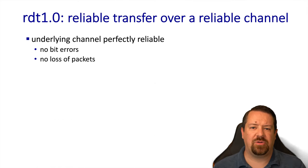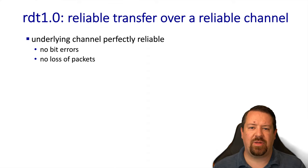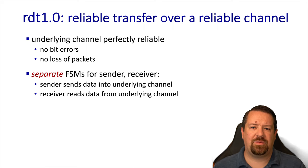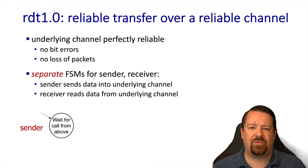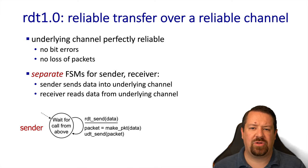We'll look at the simplest case first. RDT 1.0 assumes that the underlying channel is reliable, so it cannot have packet errors, cannot lose packets, and it will not reorder packets. This makes the job of the RDT 1.0 protocol really simple. On the sender side, we just wait for the call from above — meaning from the application — saying that it has some data to send. When the RDT send function is called, the transport layer turns the data into a packet and sends it via the underlying channel.